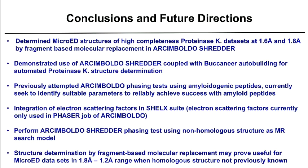In conclusion, we determined micro-ED structures of proteinase K at 1.6 and 1.8 angstrom resolution by this fragment-based approach, and demonstrated the use of Arcimboldo-Shredder coupled with Buccaneer for nearly automated structure determination. In the lab, a graduate student is attempting phasing tests using an amyloidogenic peptide to routinely determine novel peptide structures. We also look forward to integrating electron scattering factors in the SHELX suite and performing an Arcimboldo-Shredder phasing test using a completely non-homologous structure, believing this approach may prove useful for micro-ED data sets in the 2 to 1 angstrom range when a homologous structure is not known.